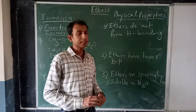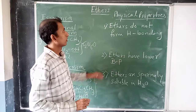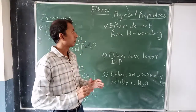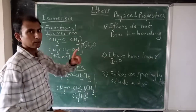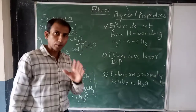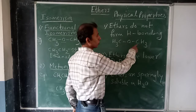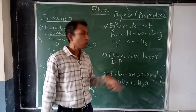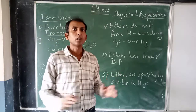Now let's continue with physical properties. This can be asked in exams. First physical property: ethers do not form hydrogen bonding. Why? Look at the structure showing the bonding of oxygen atom in ethers. As you can see, oxygen is bonded directly to carbon. To form hydrogen bonding, a hydrogen atom should be bonded directly to oxygen. But in ethers, hydrogen atoms are not directly bonded to oxygen. That's why they do not form hydrogen bonding.